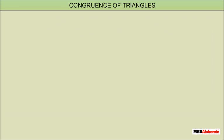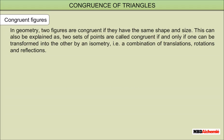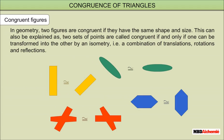Congruent figures: In geometry, two figures are congruent if they have the same shape and size. This can also be explained as: two sets of points are called congruent if and only if one can be transformed into the other by an isometry — that is, a combination of translations, rotations and reflections. For example, the pair of figures shown here are symmetrical in shape and size.